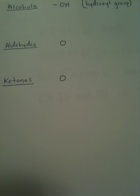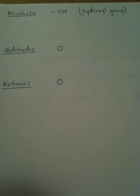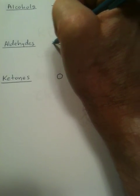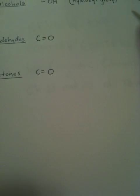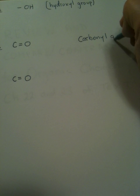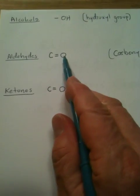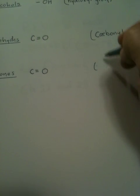Aldehydes and ketones also have oxygens, but in this case the oxygens are always double bonded to a carbon. This little group here is called a carbonyl group — just the carbon and the oxygen that's double bonded to it. Ketones also have a carbonyl group.